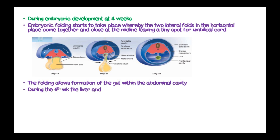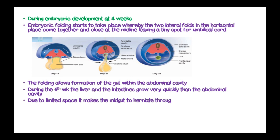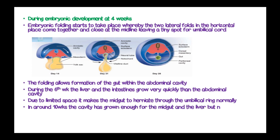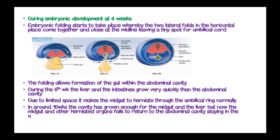During the sixth week, the liver and intestines grow very quickly relative to the abdominal cavity, and due to the limited space, the midgut herniates through the umbilical opening in normal physiology. Around ten weeks, the cavity has grown enough, but in omphalocele the midgut and the herniated organs fail to return to the abdominal cavity, staying in the umbilical cord.